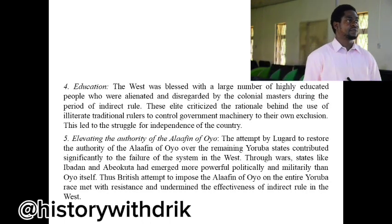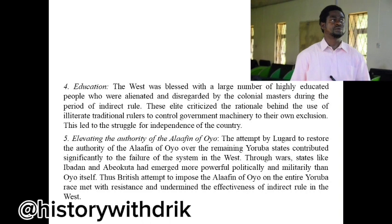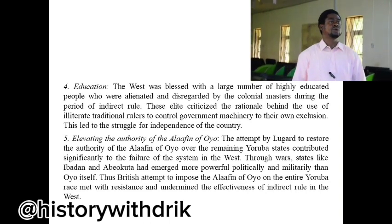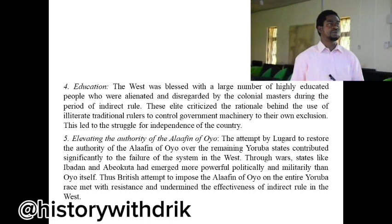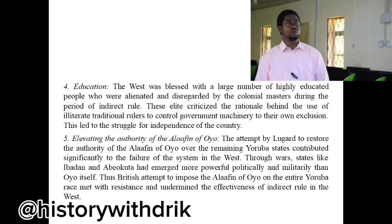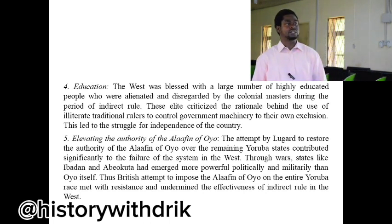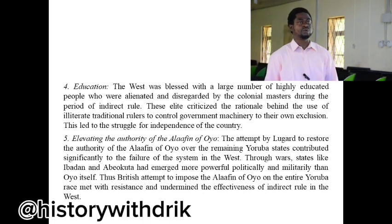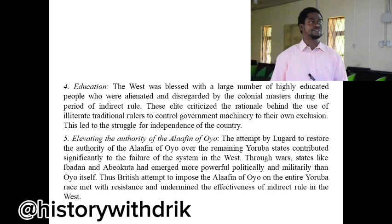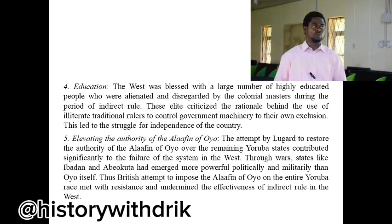Point number five was elevating the authority of the Alafin of Oyo. The attempt by Lugard to restore the authority of the Alafin of Oyo over the remaining Yoruba states contributed significantly to the failure of the system in the West. Through wars, states like Ibadan and Abeokuta had emerged more powerful politically and militarily than Oyo itself. Thus British attempts to impose the Alafin of Oyo on the entire Yoruba race met with resistance and undermined the effectiveness of indirect rule in the West.